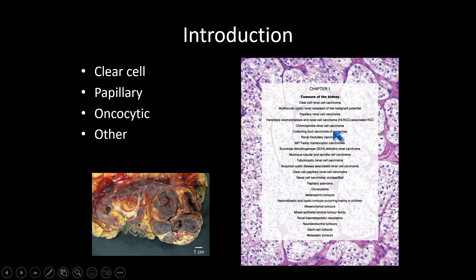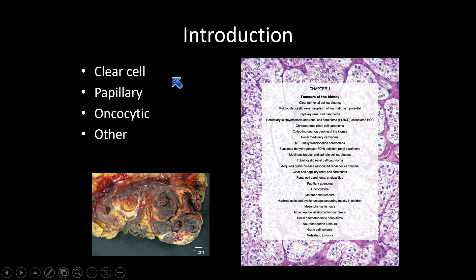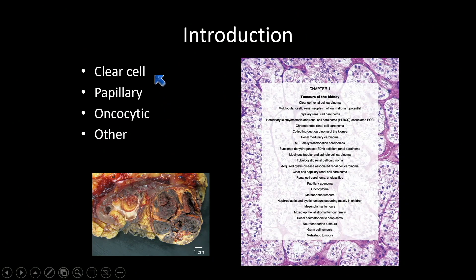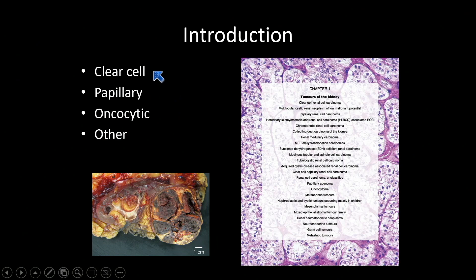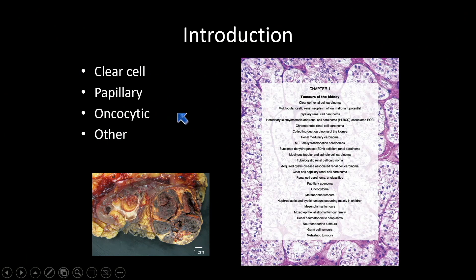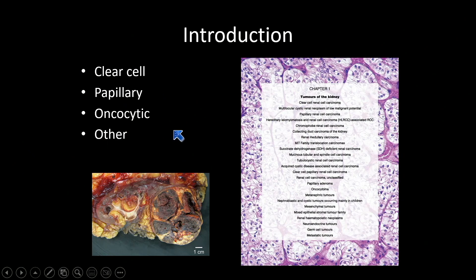Let's start off with an introduction about renal cell tumors. We'll go through a pattern-based approach covering some of the more common patterns: clear cell, papillary, and eosinophilic, and then talk about some other tumors.